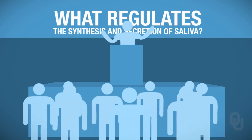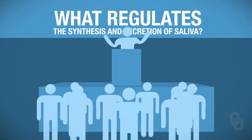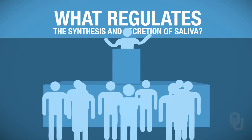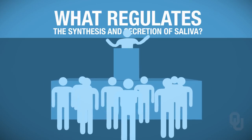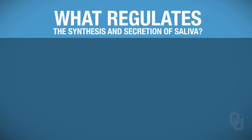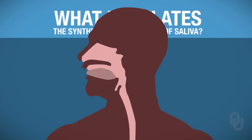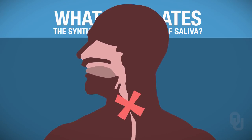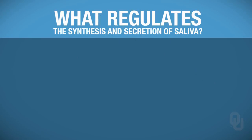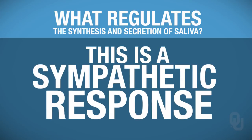Think about this: have you ever given a speech and during the speech you're nervous? You're having a sympathetic response. Throughout the speech you feel like you can't swallow because you have this thick mucus in your mouth, and you feel like if you do swallow you might choke on a mucus ball — that's because you're having a sympathetic response.